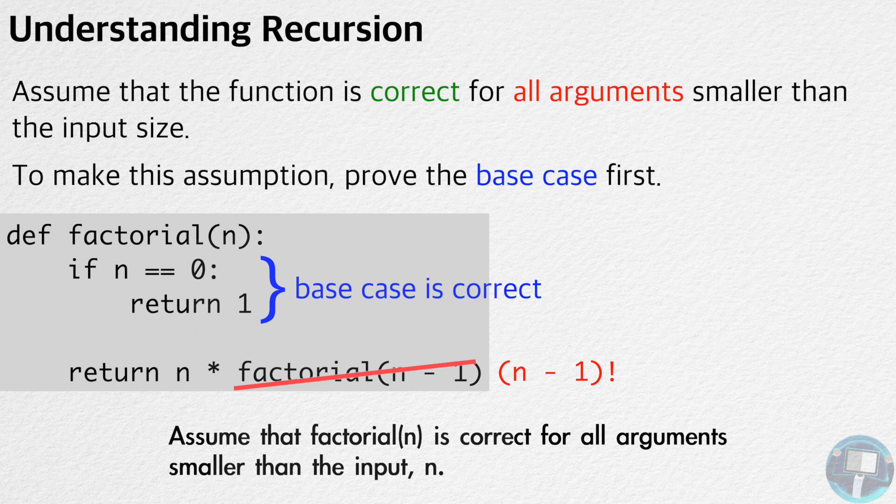Now, we can understand that the function returns 1 when n is equal to 0 and returns n times n minus 1 factorial when n is greater than 0.